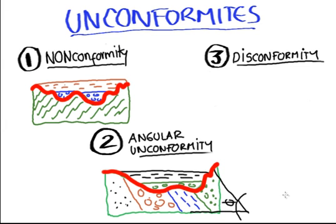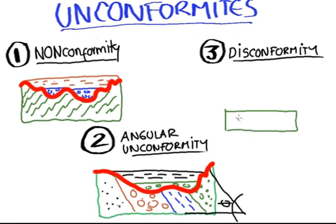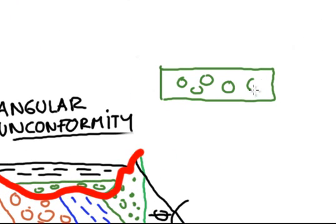The last unconformity is disconformity. And this one occurs when we have a sequence of sedimentary rocks. I'm going to add one more layer here.